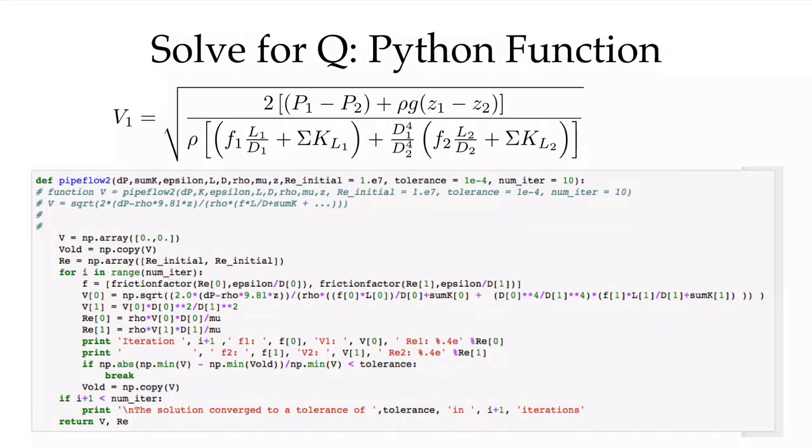All I'm doing then is starting with an initial guess of my Reynolds number, calculating a friction factor from that initial guess, calculating this velocity, then I calculate the velocity in the second pipe from conservation of mass, then I can calculate my Reynolds number based on those new estimates of the velocity, put out some information, and loop around again until I get convergence. I've made it generic so I can have a maximum number of iterations and I can also set a tolerance to which I want that convergence to be satisfied.